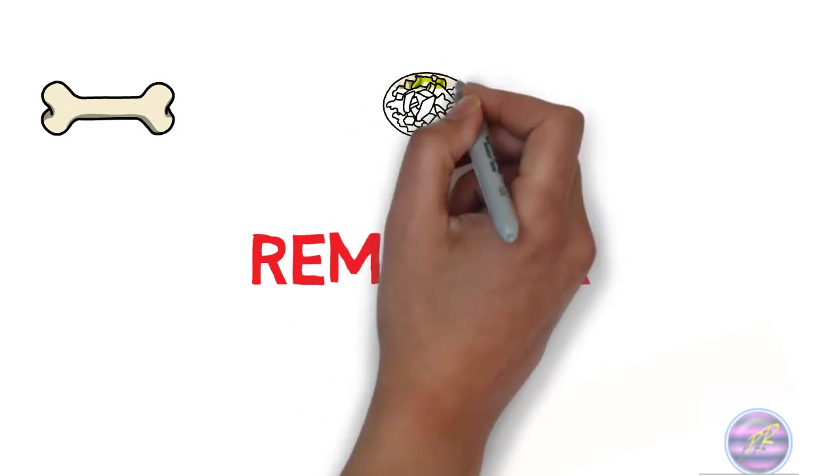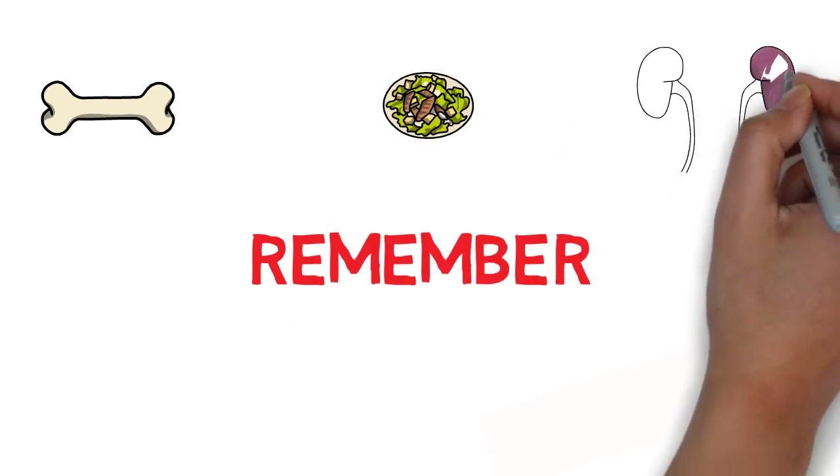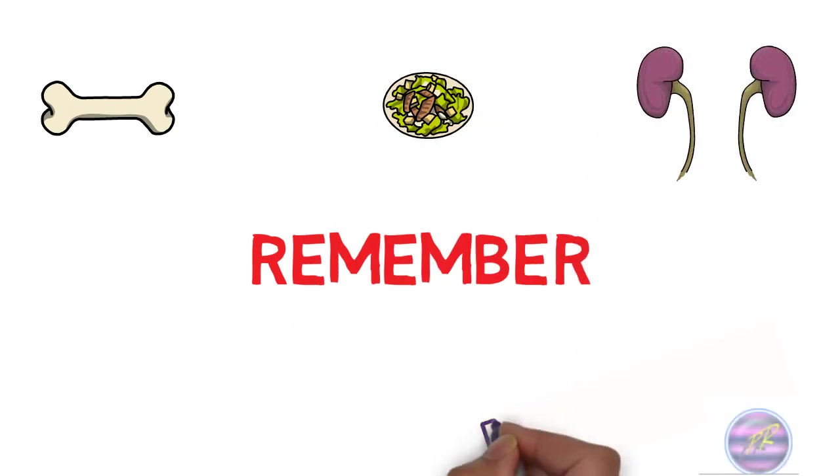So you can recall it as bone marrow disease related, nutrient related particularly iron, and hormone related. This is a simple way to remember all the causes.